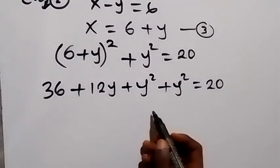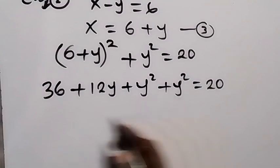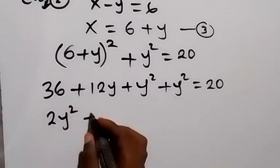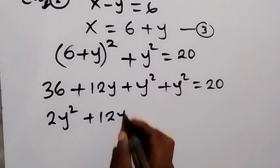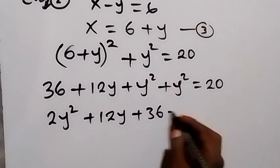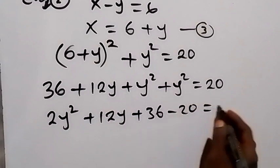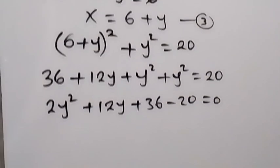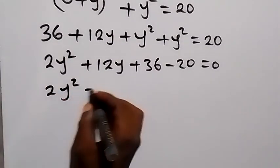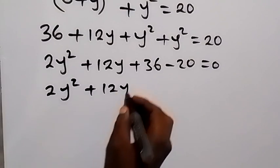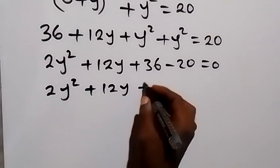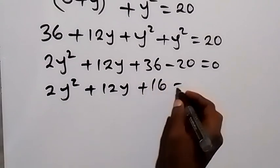Combining like terms: y squared plus y squared gives 2y squared, plus 12y, plus 36, minus 20 equals 0. This simplifies to 2y squared plus 12y plus 16 equals 0.